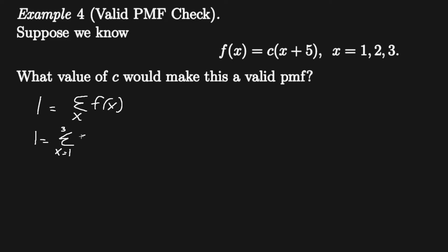Now this is very easy. We can write this as c times one plus five plus two plus five plus three plus five, which should all equal, well if we simplify this, one is equal to c times six plus seven plus eight.